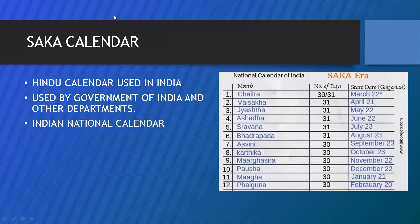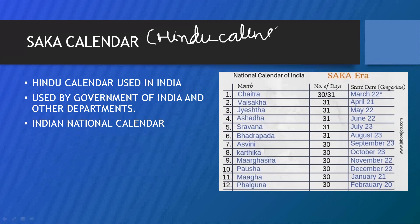The next type of calendar is the Sakha calendar, which is also called the Hindu calendar or the Indian calendar. There are two important types of calendars: one is Gregorian and one is Sakha. The Hindu calendar is used in India and also by the government and other departments of India. It is called the Indian National Calendar.